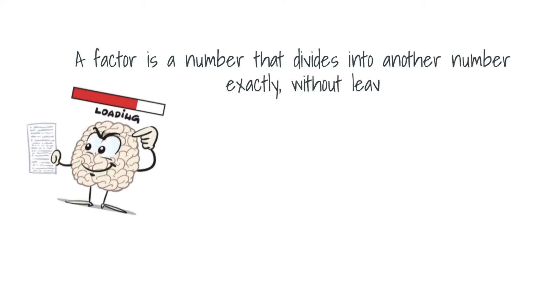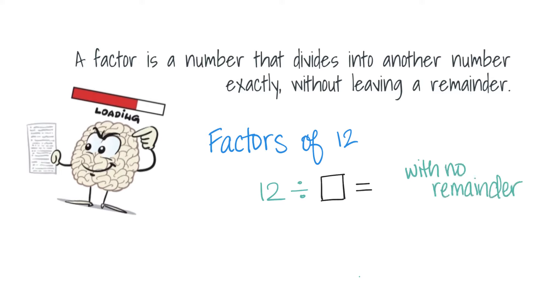Now, in case you forgot, a factor is a number that divides into another number exactly without leaving a remainder. So, for example, if we're thinking about the factors of 12, we need to think about numbers we can divide 12 by and not get a remainder. Another way to think about this is, what numbers can be multiplied together to make 12? Well, 1 times 12, 2 times 6, and 4 times 3.